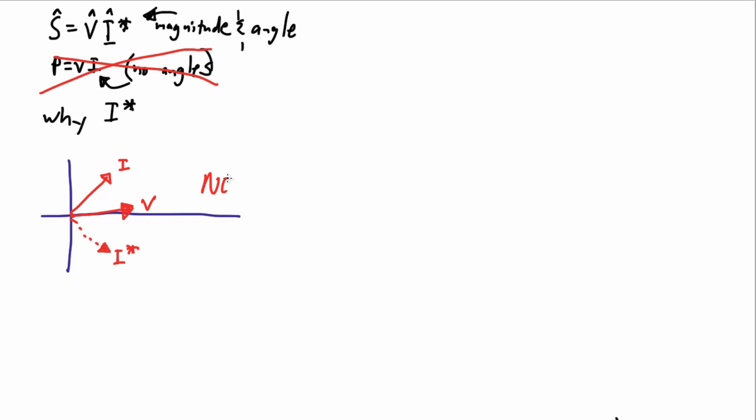It is a ridiculously common belief that the conjugate is used to flip the current vector across the voltage vector, just like this. But that's really not the case of what the conjugate does.